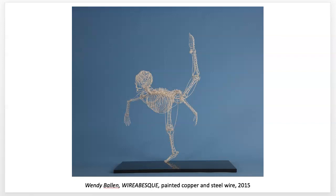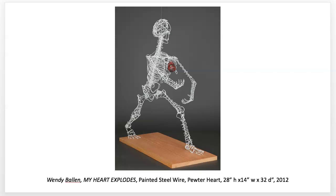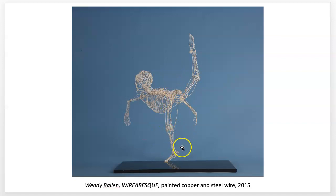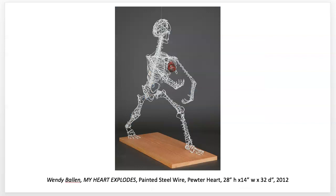Was it necessary for her to use monofilament? Maybe. She could have possibly got a rod in the foot coming down into a base to hold it up. A lot of people tend to want to use monofilament, like fishing line, but it can be kind of a cheesy thing because no one really believes it's floating. You want to ask yourself: why does it need to hang or float? If you have a good reason, then go for it — but sometimes people use it as a crutch.